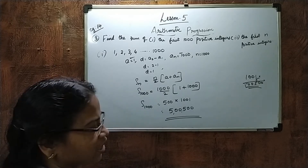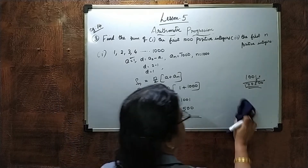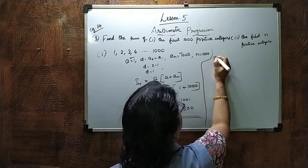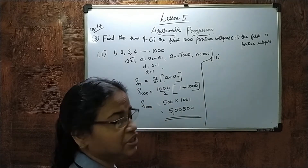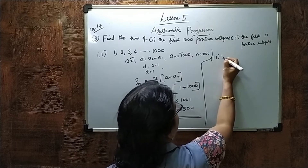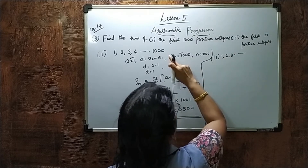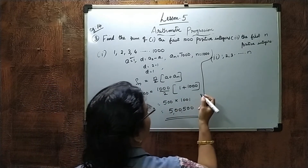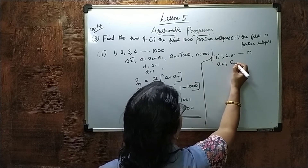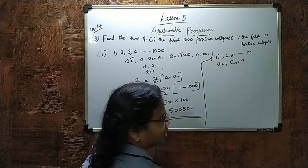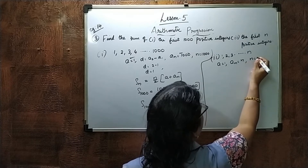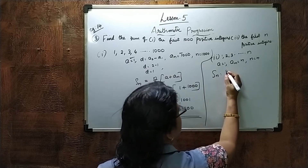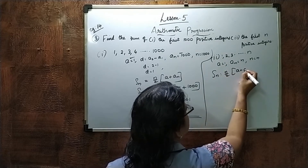Now the second question: the first n positive integers. That means 1, 2, 3, and so on up to N, so the last number is N. Here A equals 1, An equals N, and N equals N itself.